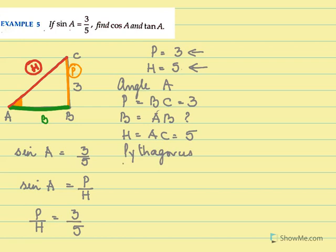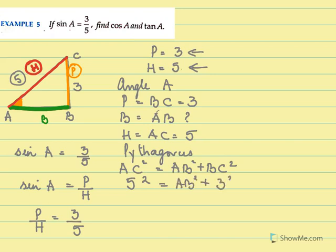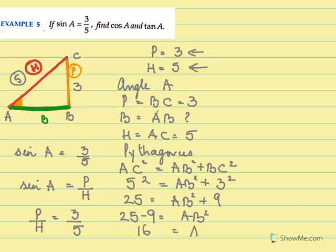For Pythagoras' theorem we will do AC square equal to AB square plus BC square. AC is 5, so we have 5 square equal to AB square plus 3 square. So 25 equal to AB square plus 9. Then 25 minus 9 equal to AB square. 16 equal to AB square. So AB equal to 4.